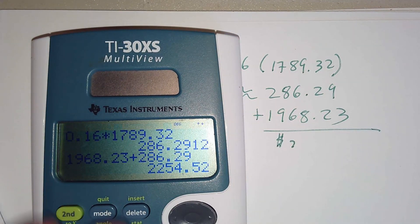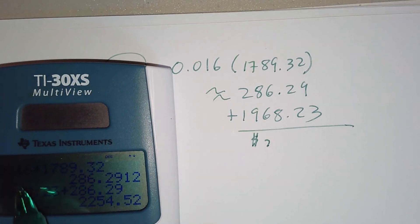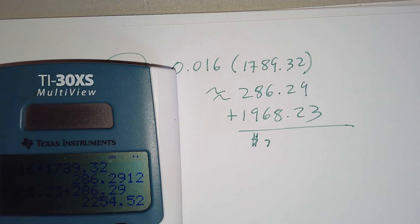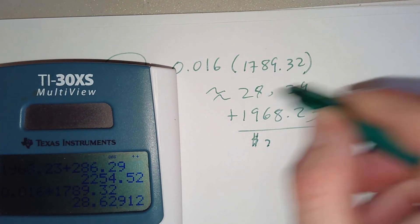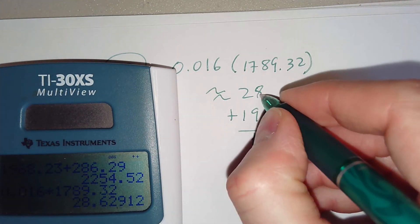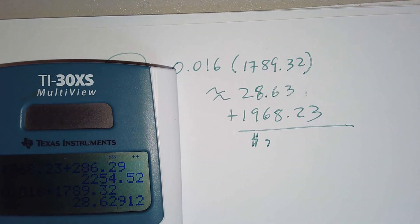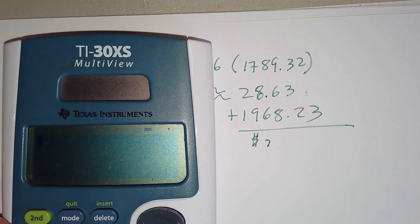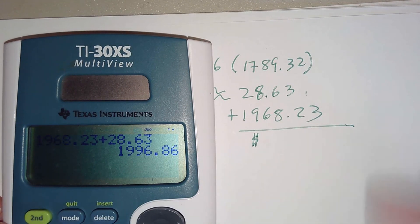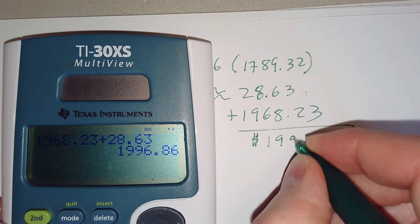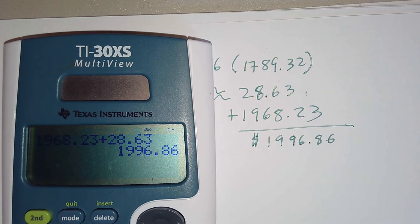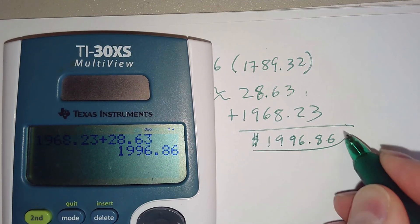So we'll go ahead and add those together. And that sounds a little high for interest. Let's double-check it. Oh, see how I entered that wrong in the calculator? That's something you want to check. So let's redo that. I'm going to correct it here. All right, so let's first fix this. Our interest should be $28.63. And then we're going to add that to the $1,968.23, so that would give us $1,996.86. And so that would be how much is due with interest.